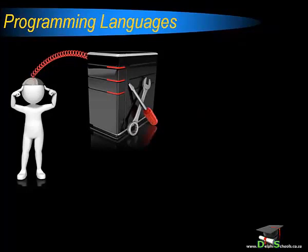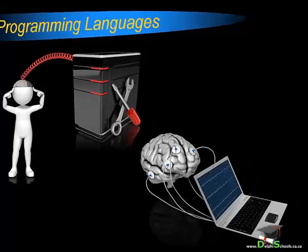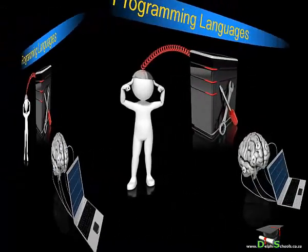A program will therefore never allow a computer to do something without an explicit instruction given by a programmer. So, if programs do smart things, it is because the programmers that created them are smart.